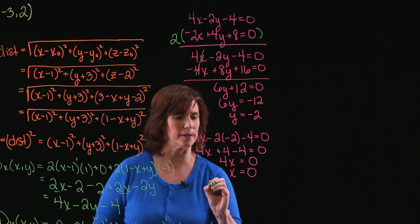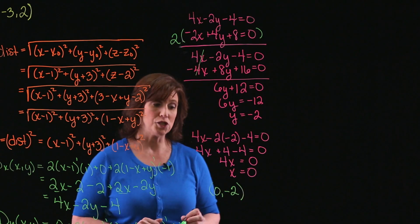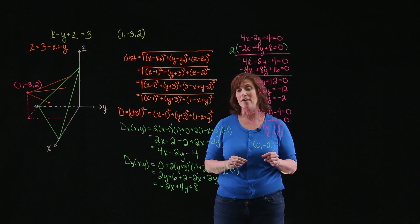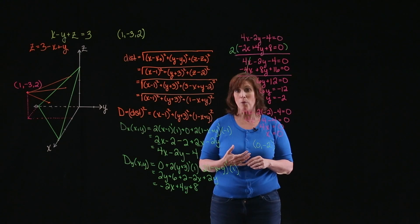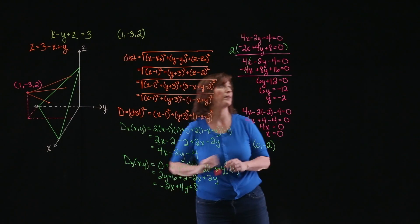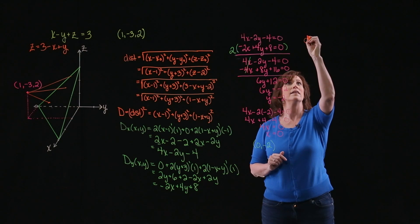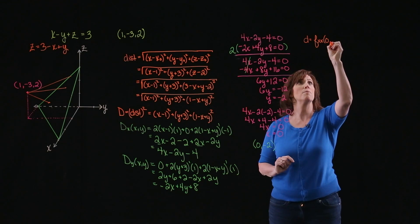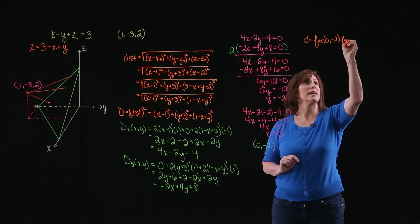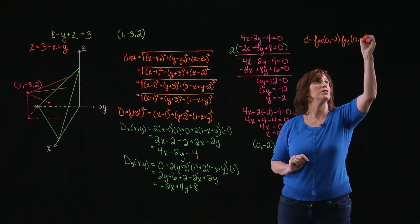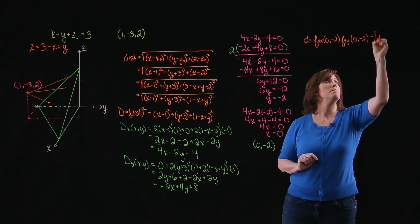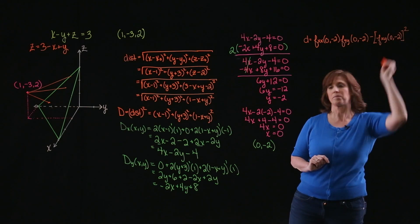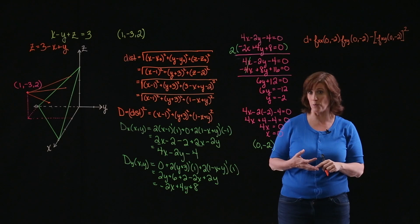Just because I have a critical point doesn't mean I have an extremum, so I need to use the second partial derivative test. The test says: compute the second partial with respect to x evaluated at the critical point (0, negative 2), multiplied by the second partial with respect to y at (0, negative 2), then subtract the mixed partial at (0, negative 2) squared, and determine whether the result is positive, negative, or zero.